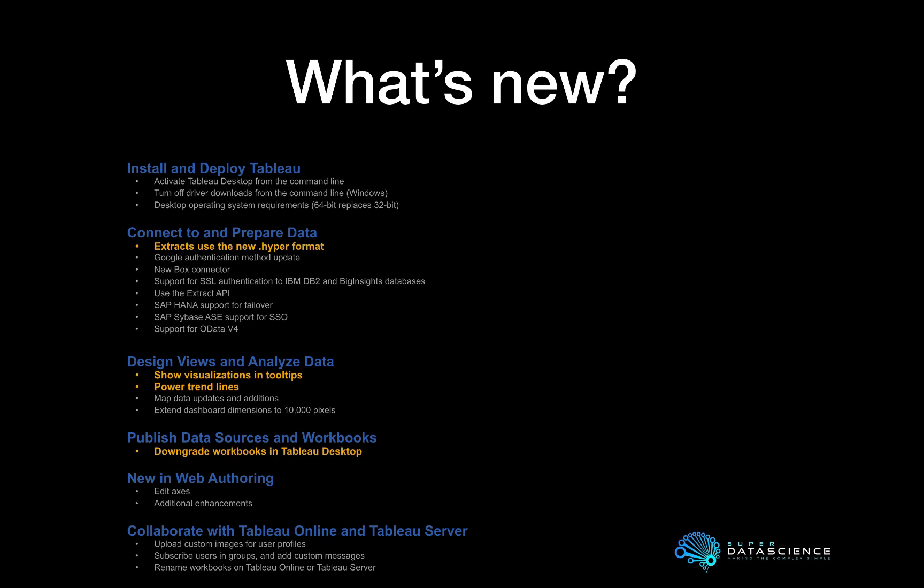We'll be looking at the new .hyper format that comes with 10.5 — brand spanking new. We'll also look at visualizations in tooltips and take you through a quick demonstration of how this works in a real-world example. We'll have a brief look at the power trend lines now available in your models, as well as what I personally think is an extremely good feature: how to downgrade your workbooks in Tableau Desktop. Super handy — I've been asking for this for quite some time.